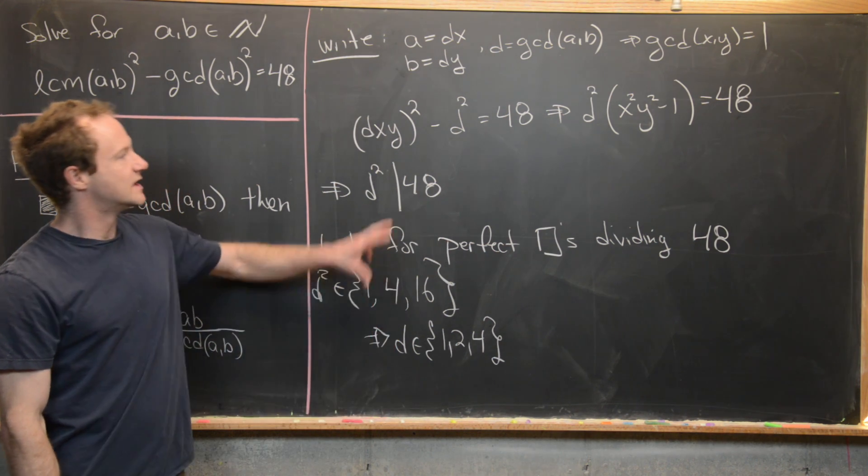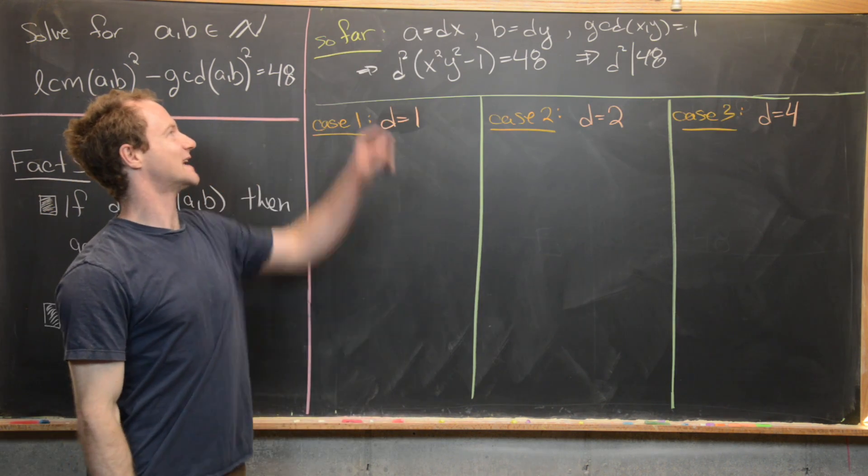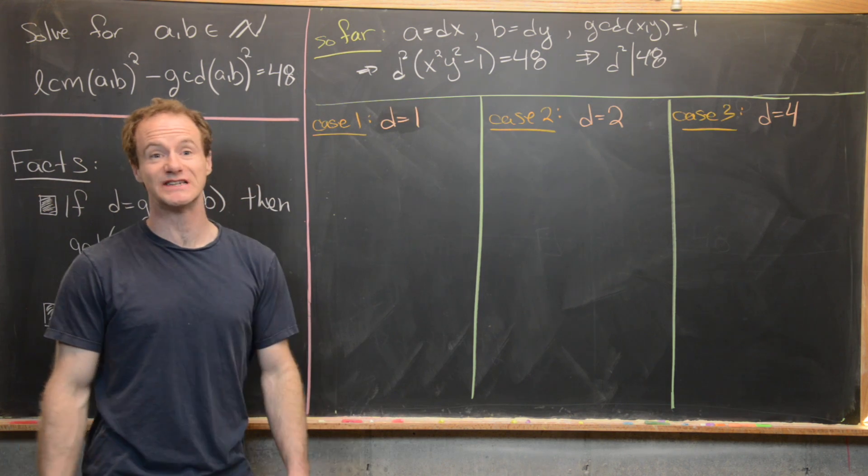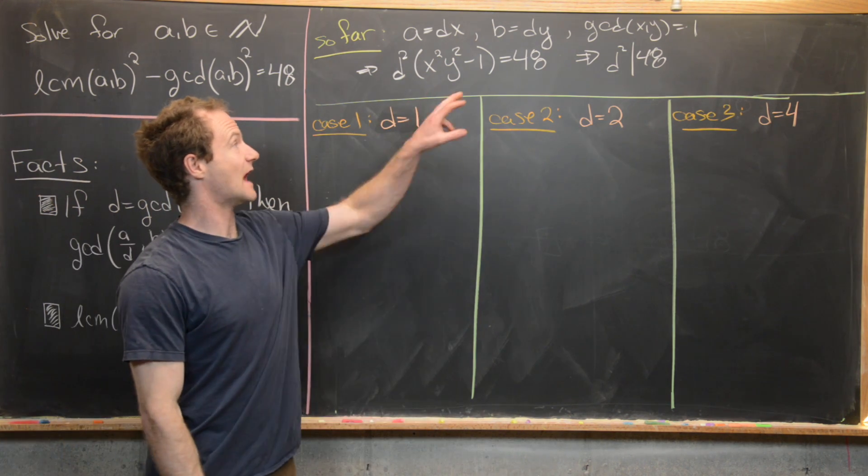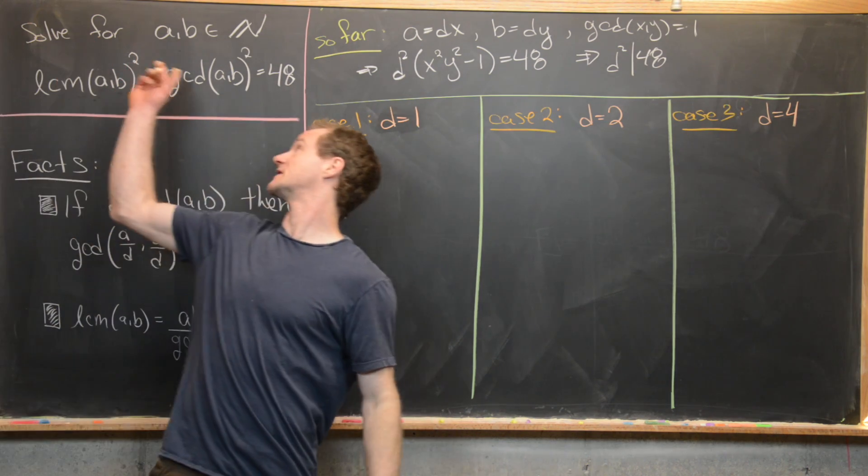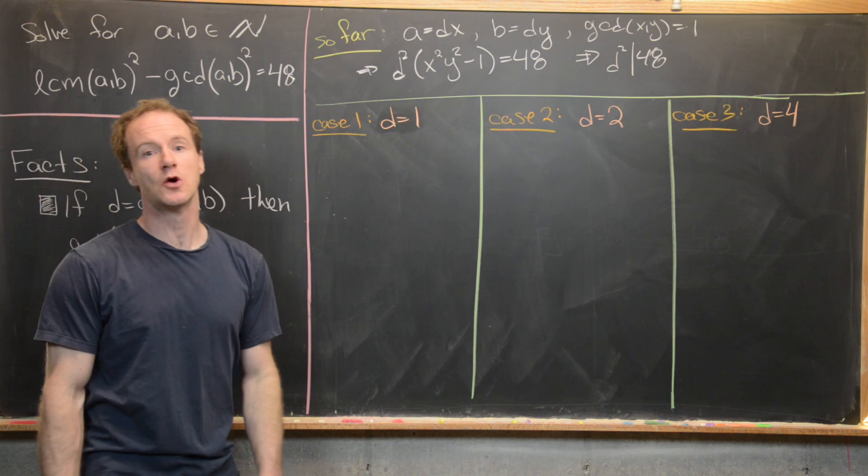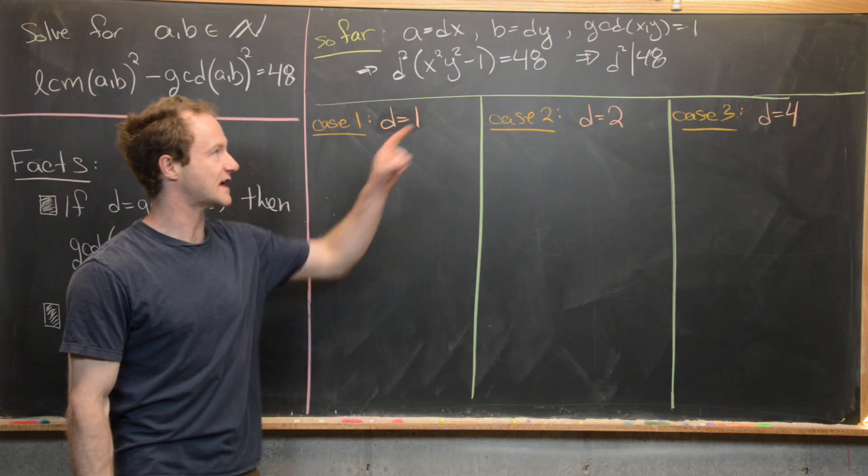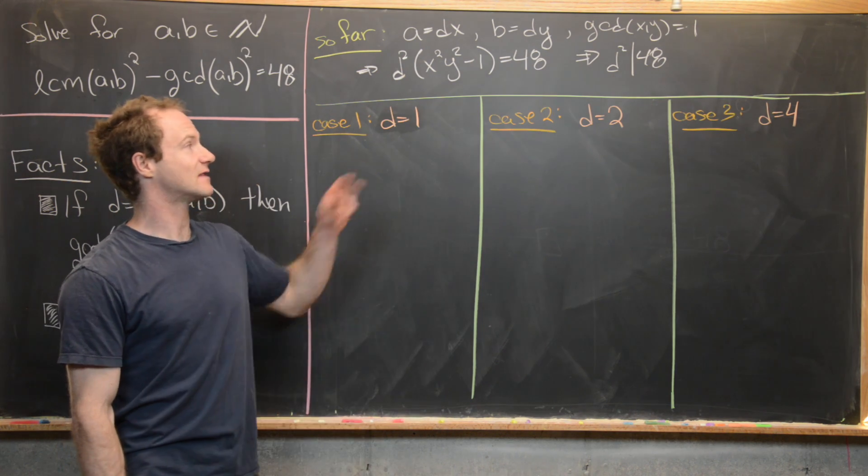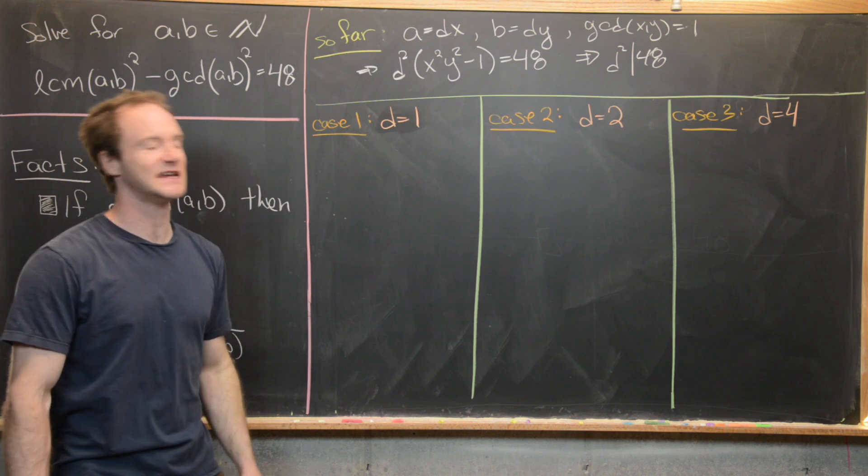So now I'll go ahead and summarize this at the top of the board. On the last board, we set A equal to D times X, B equal to D times Y, where D was the GCD of A and B. That made the GCD of X and Y 1. And then that also transformed this equation into the equation D squared times the quantity X squared, Y squared minus 1 equals 48. That told us that D squared divided 48. And that led us to three cases, D equals 1, D equals 2, or D equals 4. Now we're going to work on each of these cases.